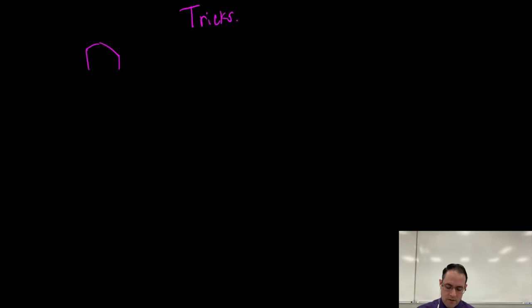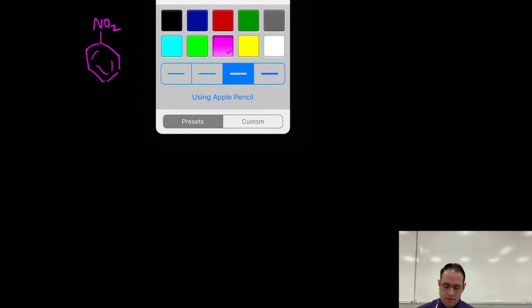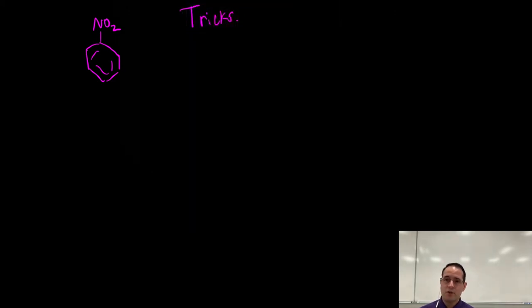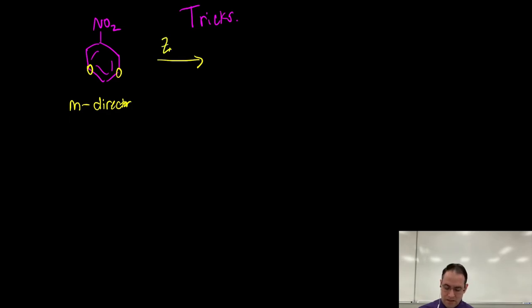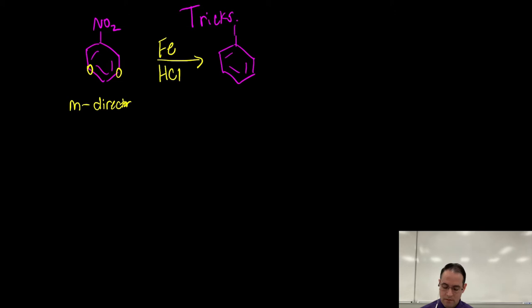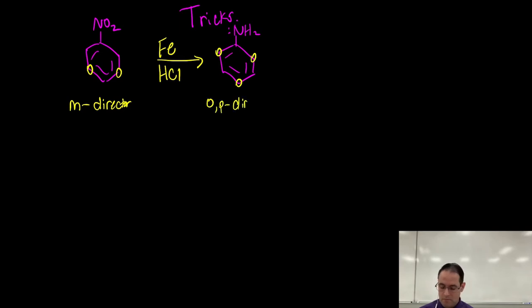There are maybe four tricks to think about. First, if we have nitrobenzene, we know the nitro group is an electron-withdrawing group and a meta-director. If we treat this with iron and hydrochloric acid, we can make aniline. Now aniline, because we have a nitrogen with a lone pair right next to the aromatic ring, is an ortho-para director. Because of that interesting anomaly, we could make meta-chloroaniline, for example.